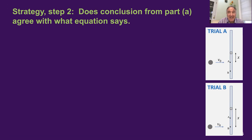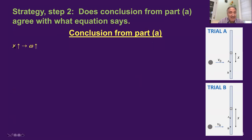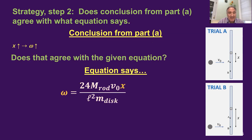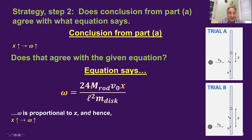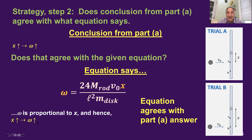Step two: does our conclusion from part A agree with what the equation says? Our conclusion was that if X is made bigger, the angular speed of the rod goes up. In the equation, omega is proportional to X — X appears in the numerator — so the equation says if X goes up, omega goes up. For instance, if X is doubled, omega gets doubled. So the equation found on the internet agrees with our part A reasoning: both say when X goes up, omega goes up.